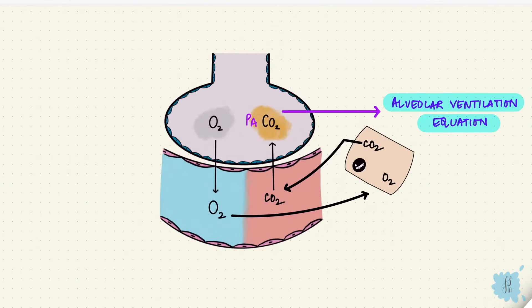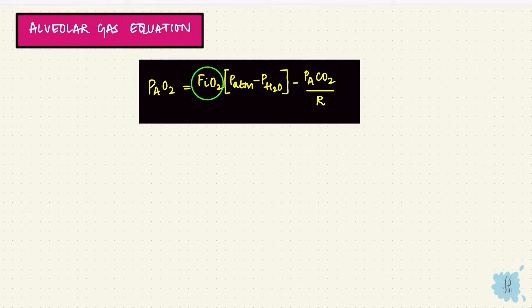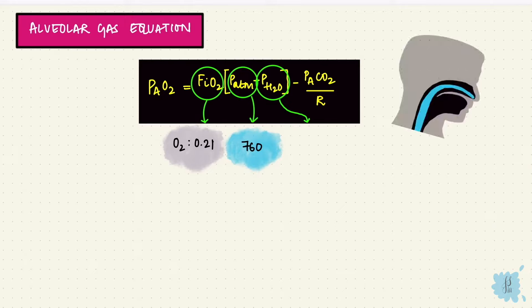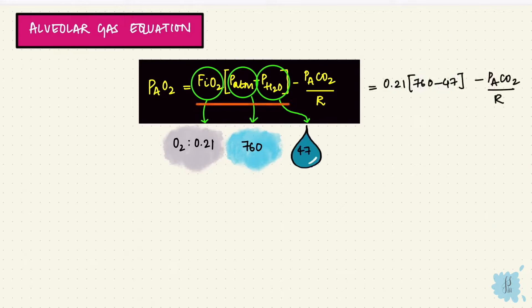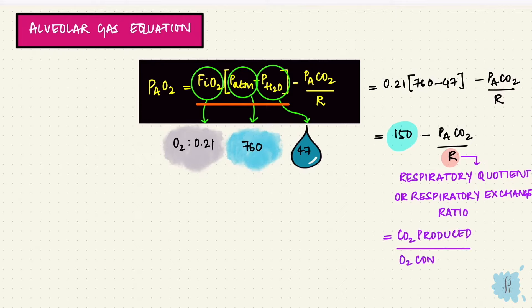That was carbon dioxide — but what about oxygen? Alveolar oxygen can be predicted by the alveolar gas equation: alveolar oxygen equals FiO2 times atmospheric pressure minus water vapor pressure, minus alveolar carbon dioxide over the respiratory quotient. FiO2 is the fraction of oxygen in inspired air, usually 21% or 0.21. Atmospheric pressure is 760 mmHg. Water vapor pressure from humidification of inspired air is 47 mmHg. So this term becomes 150 mmHg. The respiratory quotient, or respiratory exchange ratio — the ratio of CO2 produced to O2 consumed — is usually 0.8.